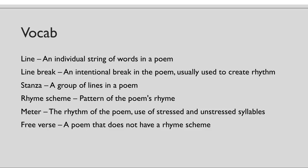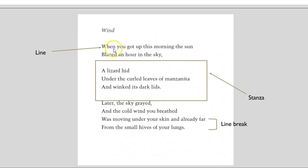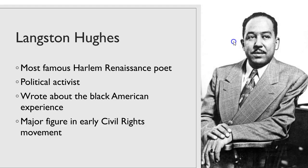Free verse is a poem that does not have a rhyme scheme. A lot of poetry in the modern age is free verse — a lot of poems do not actually rhyme. You can see in this visual that one individual line is shown, and there are three stanzas total. The line break is just the decision to break the line up — for example, they could have written 'the lizard hid under the curled leaves' all on one line, but they decided to put the break right after the word 'hid.'